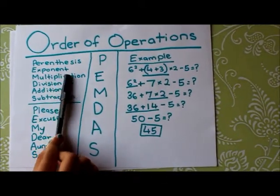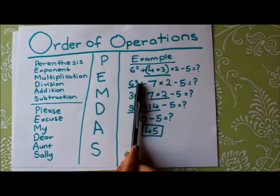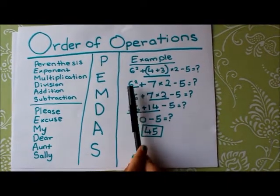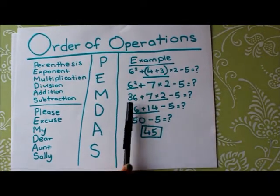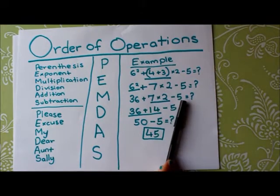And next is exponent, so I look for any exponents, and 6 to the power of 2 is an exponent. 6 to the power of 2 is like 6 times 6, and 6 times 6 is 36. So 36 plus 7 times 2 minus 5.